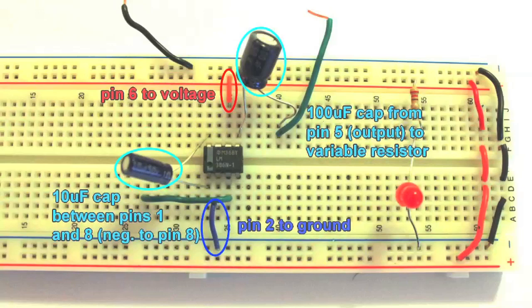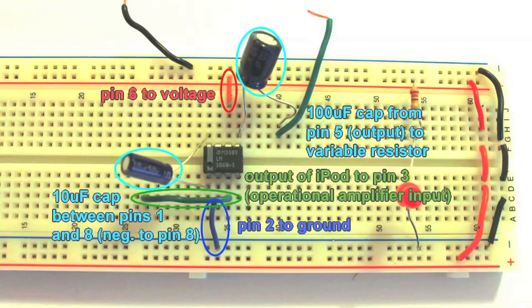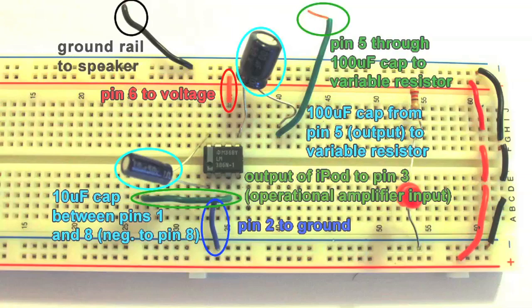We'll eventually connect our signal to the operational amplifier using the green wire that goes to the empty row on the left. The black and green wires that extend out of frame will attach to the speaker terminals. We'll connect these to the speaker in a minute.